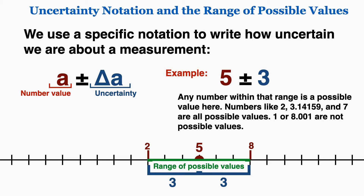Any number within that range is a possible value. Numbers like 2, 3.14159, and 7 are all possible values, whereas 1 or 8.001 are not possible values because they fall outside that range. So that's physically what the symbol 5 plus or minus 3 represents — the actual measurement could fall anywhere along the range 5 minus 3 to 5 plus 3.